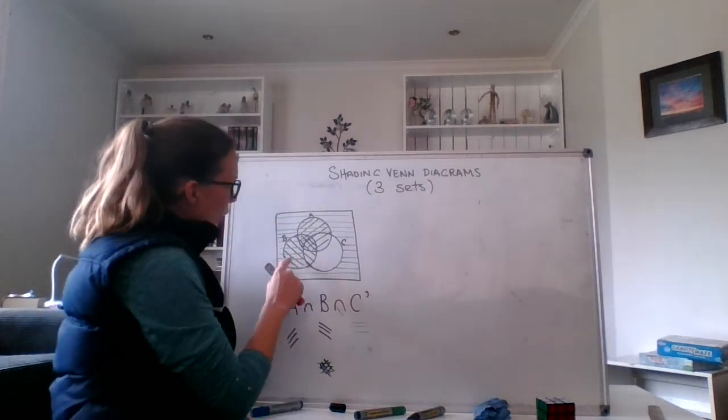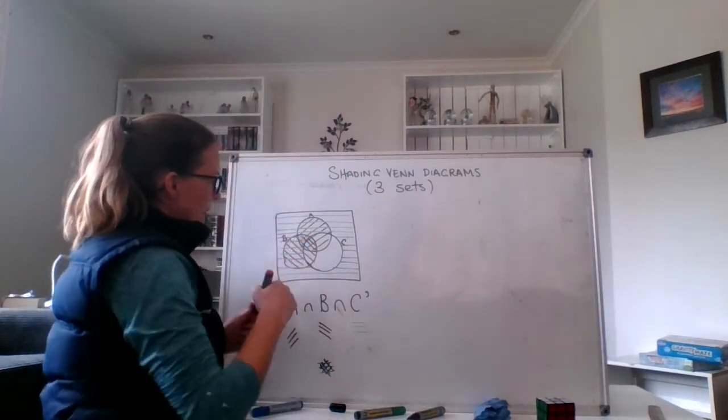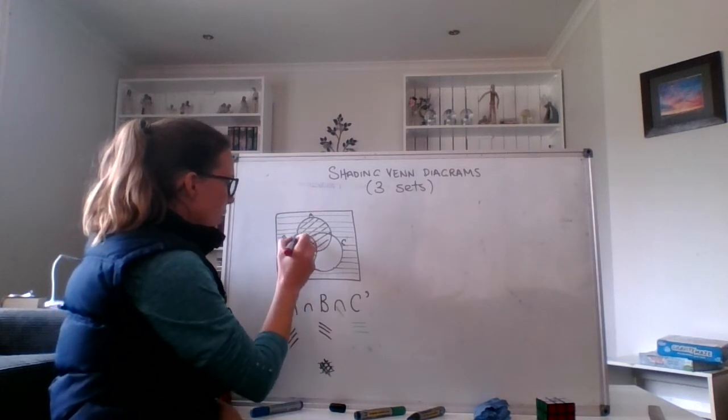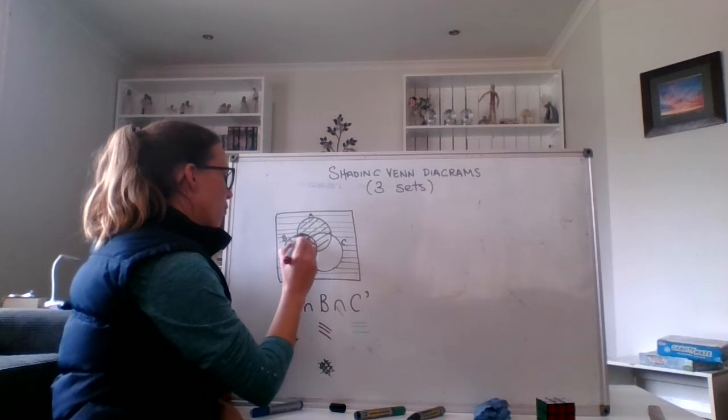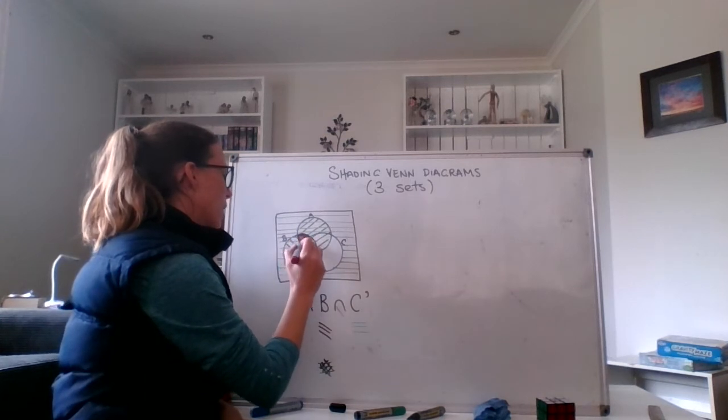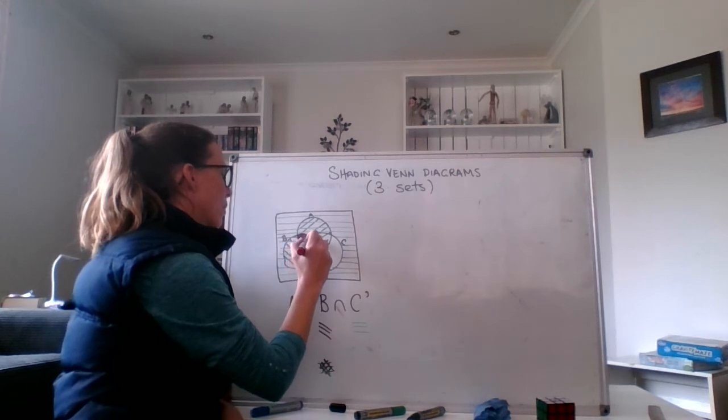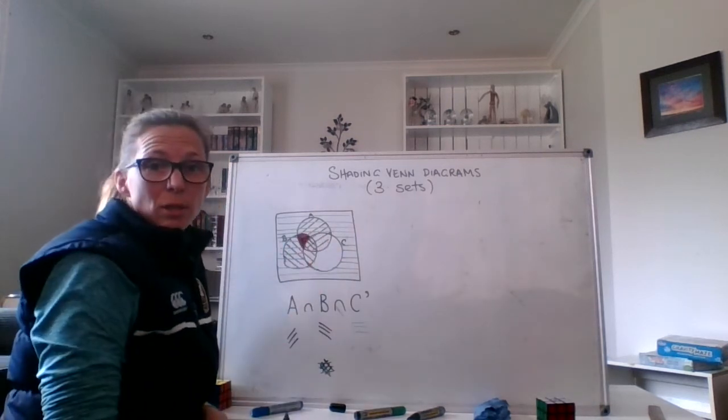Now, the only place I've got all three sections shaded is here, here, and here. So this tiny little, kind of, almost a triangular shape, satisfies those conditions.